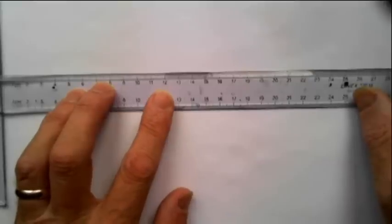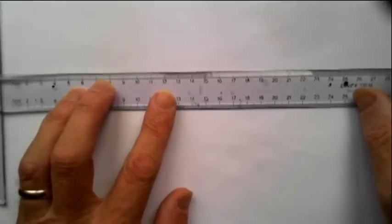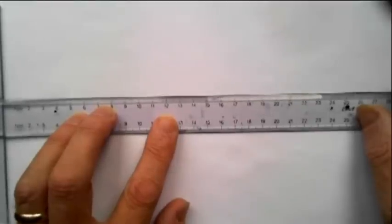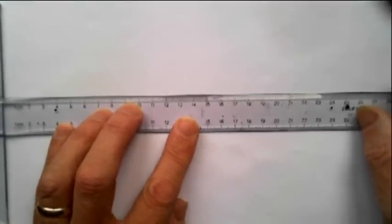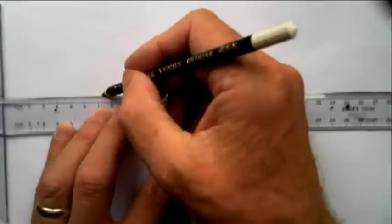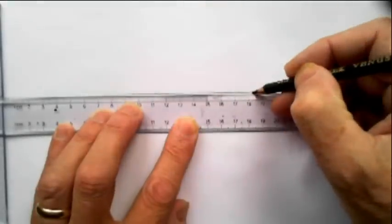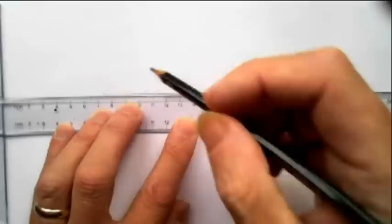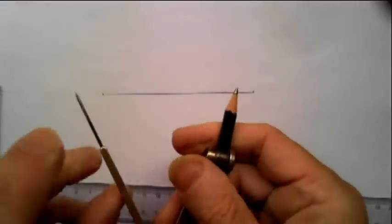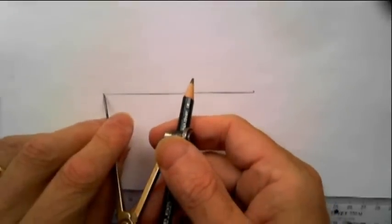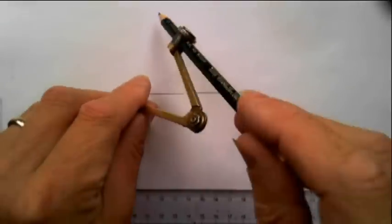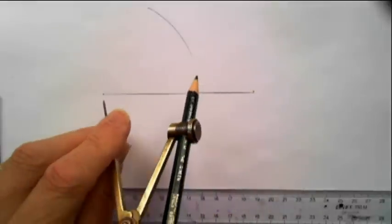This particular video is on divisions, so I'll start off simply by dividing a line in half. I hope I'm not insulting your intelligence by showing you this, I should imagine most people know how to do it. Draw your line, open your compasses to something more than halfway, doesn't matter, strike an arc, top and bottom.